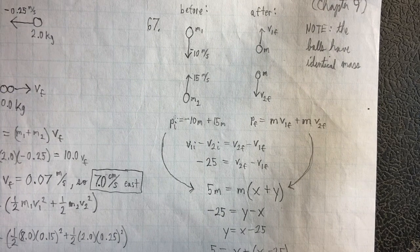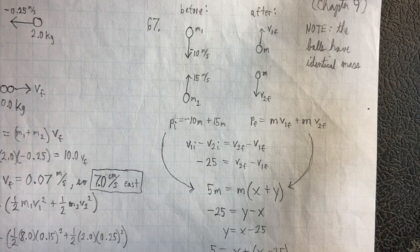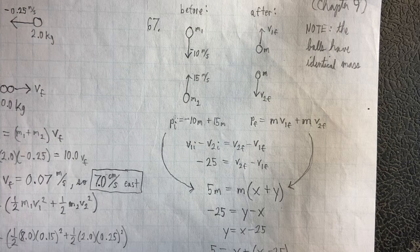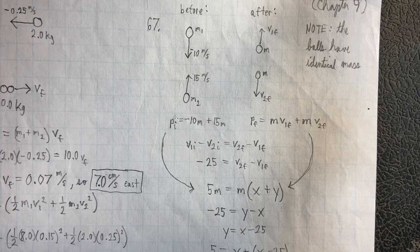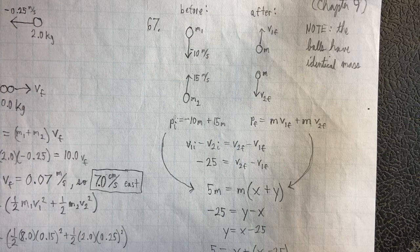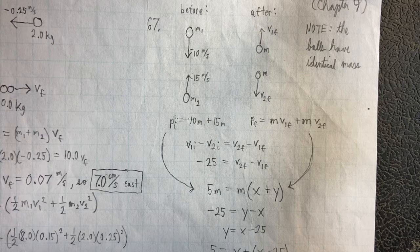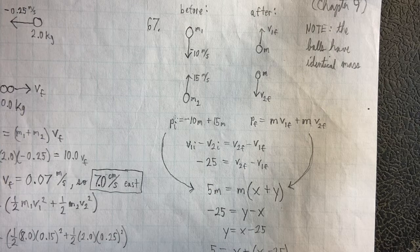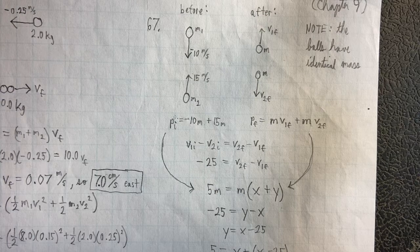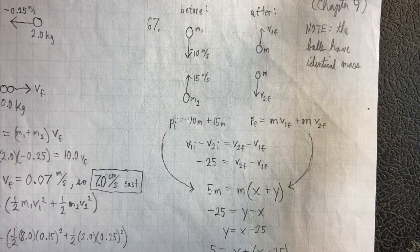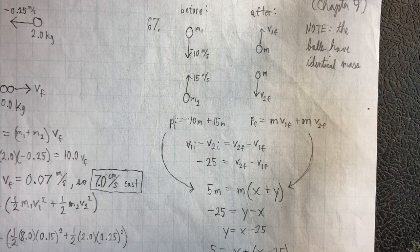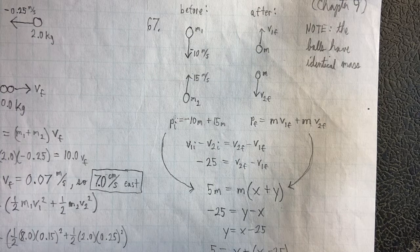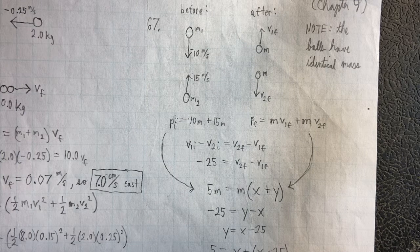Okay, so in number 67, we have balls of identical mass. And that's going to make things considerably simpler. Okay, so we've got our PI of negative 10m plus 15m. Our PF of mV1F plus mV2F. And notice how we bring those down. And we can distribute the m because we know that the masses are identical. So that simply becomes 5m equals mx plus y.